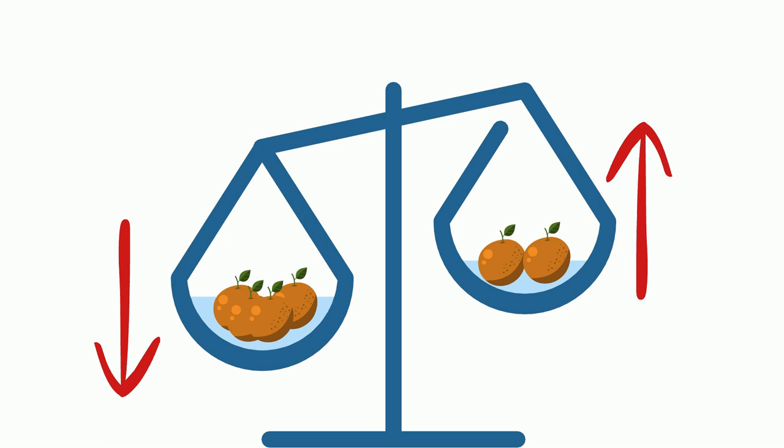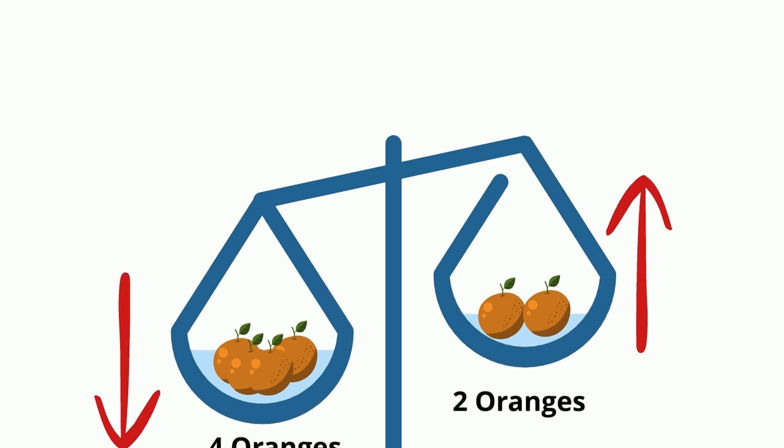This happened because the weight in the left pan has increased as it has four oranges while the right pan still has two oranges. So now the weight in the left pan is heavier than the right pan.